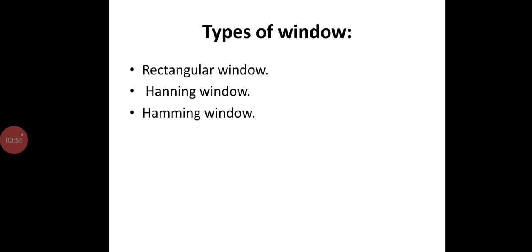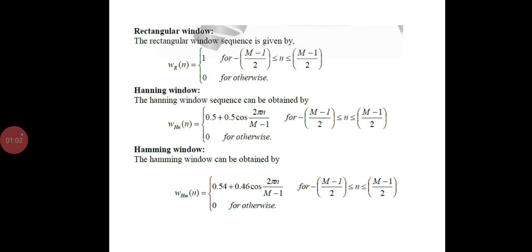Types of windows: rectangular window, hamming window, and hanning window. Now, we can define the rectangular window as: rectangular window sequence Wr(n) equals 1 for -(m-1)/2 ≤ n ≤ (m-1)/2.